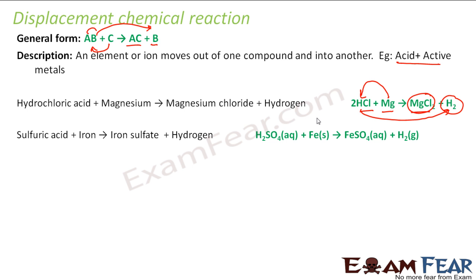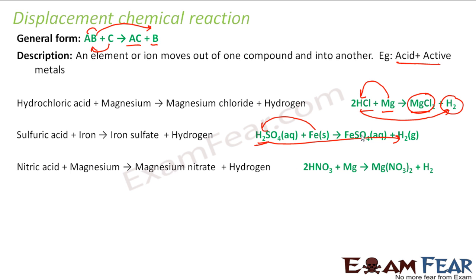Sulfuric acid plus iron is equal to iron sulfate plus hydrogen. So here you can see iron came here, it kicked out hydrogen, then hydrogen is an independent entity now. Fe kicked out hydrogen and it becomes FeSO4.